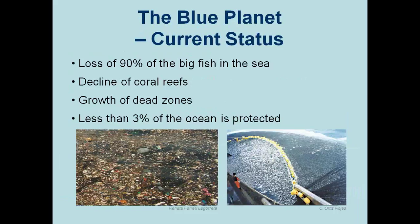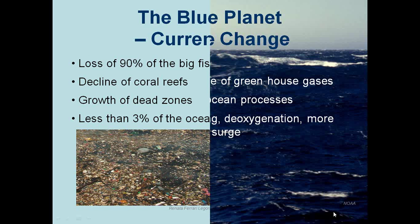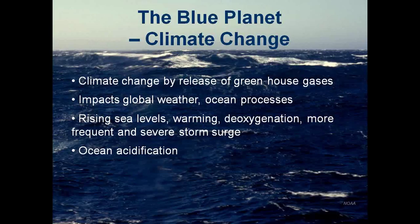The current status of the ocean is a cause for concern. We have lost 90% of the big fish in the sea, we have seen the decline of coral reefs and growth of dead zones, and while 12% of land is under some form of protection, less than 3% of the ocean is protected. One of the biggest impacts on the ocean is climate change, caused by the release of greenhouse gases including carbon dioxide. Its effects on the ocean include rising sea levels, changes in temperature, reduced availability of oxygen, and ocean acidification, which has negative impacts on shellfish, reef-building corals, and various life stages of fish.